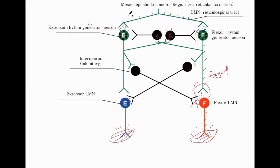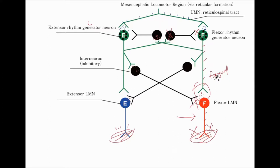Whenever the extensor side is active, it also works to inhibit the opposite side, automatically silencing the flexor side. So although the flexors are already fatigued, the inhibitory interneurons provide a double security measure to ensure the flexor side stays silent.